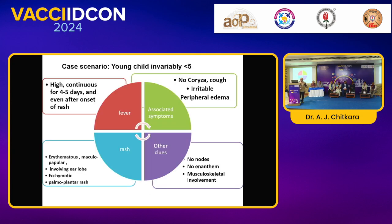This is a scenario often seen in clinical practice — invariably young children below 5 years with high-grade continuous fever and evanescent or persistent rash. No respiratory signs or symptoms. However, for the illness the child has, the child appears very irritable because the limbs are aching, and you may find peripheral edema. The rash may be pleomorphic — a vasculitis-type rash involving ear lobes, or an evanescent maculopapular rash, sometimes ecchymotic as in vasculitic rash — palmoplantar involvement, no significant nodes in the mesentery, musculoskeletal system involvement. Any guesses, Angelica?